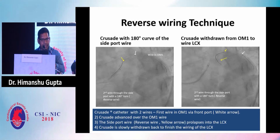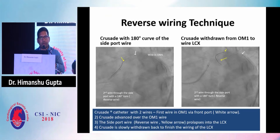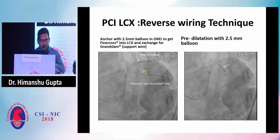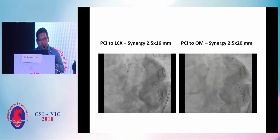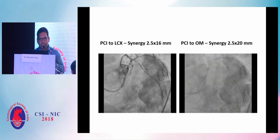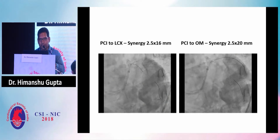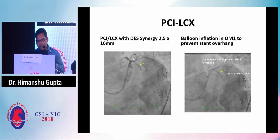Using the Crusade with 180-degree curve of the side port wire, we first wired OM1, then advanced and pulled back the Crusade so that the side wire prolapses into the side branch. This was successful. We then anchored a balloon in OM1 for support, exchanged the Crusade with a Fine-Cross, and used a Grand Slam wire for extra support. Pre-dilatation was done with a 2.5 mm balloon, followed by PCI to LCX with a Synergy stent of 2.5 × 16 mm and PCI to OM with a Synergy stent of 2.5 × 20 mm.